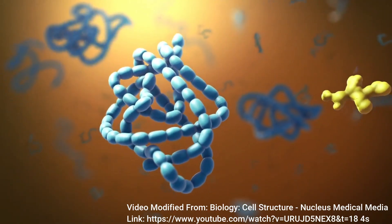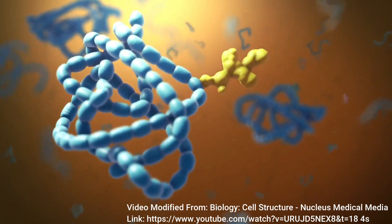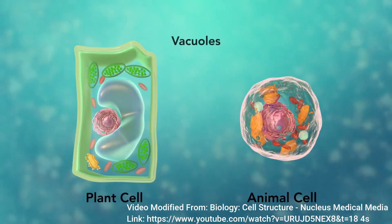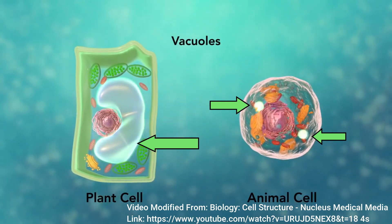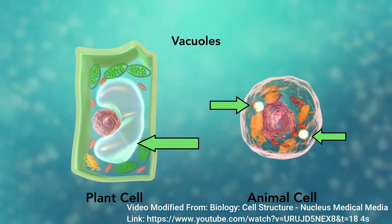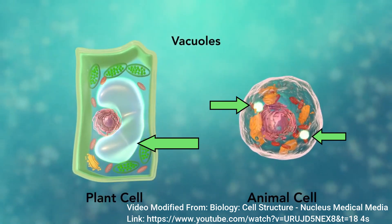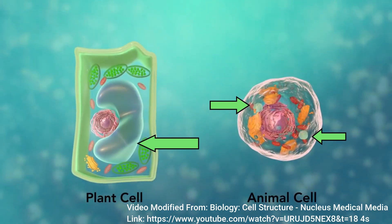Once in the Golgi body, other materials such as carbs and lipids can be added to the protein. Vacuoles are used for the storage of undigested materials, breakdown of waste products, and the hydrolysis of macromolecules. It is important to note that while vacuoles are always found in plant cells, they are not always present in animal cells.